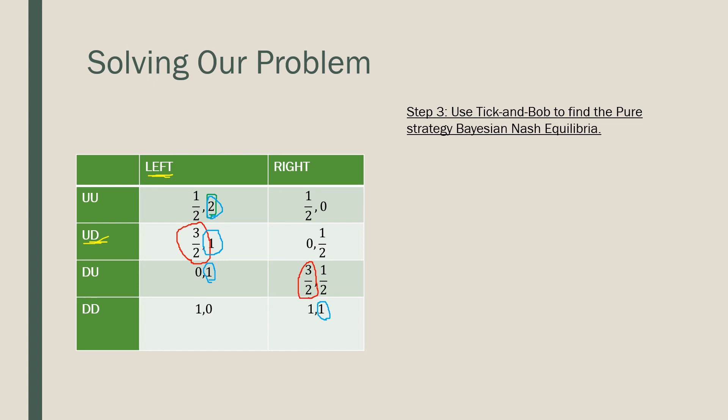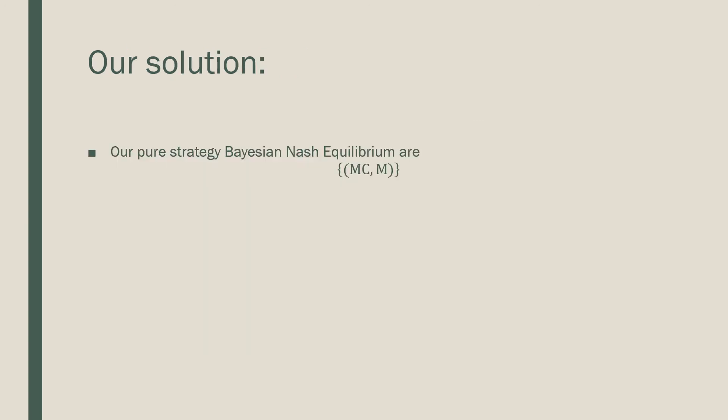So the way we write this solution, as given on the next slide here, is our pure strategy Bayesian Nash equilibrium is MC and M. That's how we solve this problem. We have another more complicated version in our next video, and I will see you there. Take care.